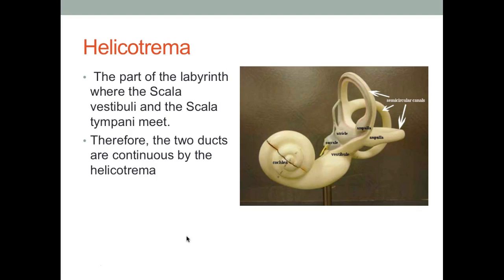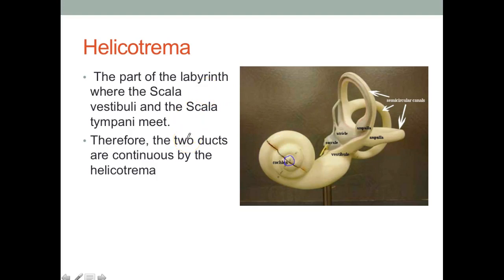The helicotrema is the part of the bony labyrinth where the scala vestibuli and the scala tympani meet — therefore the ducts are continuous by the helicotrema. On the model, the helicotrema is at the center portion of the cochlea. This is the area where scala tympani and scala vestibuli meet — the two outer ducts connect in that area.